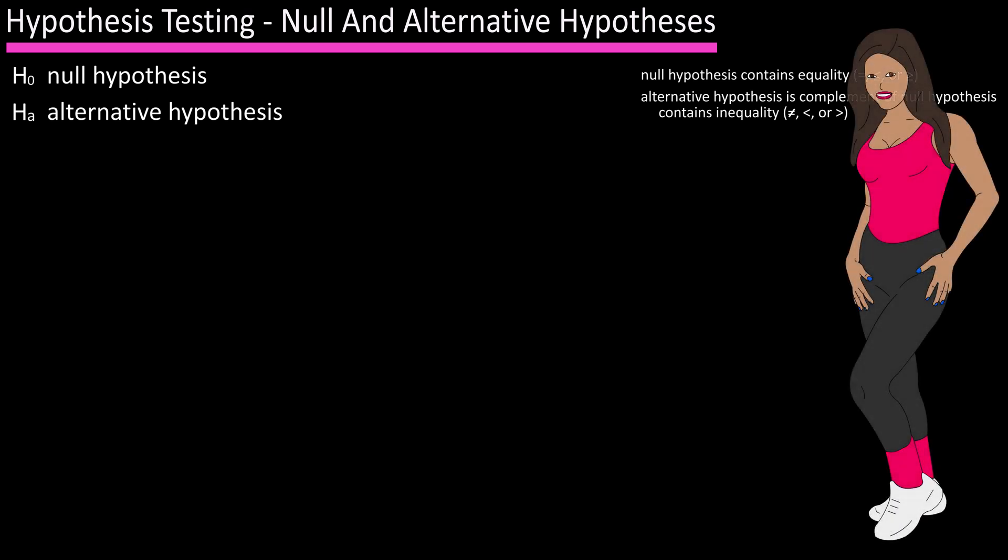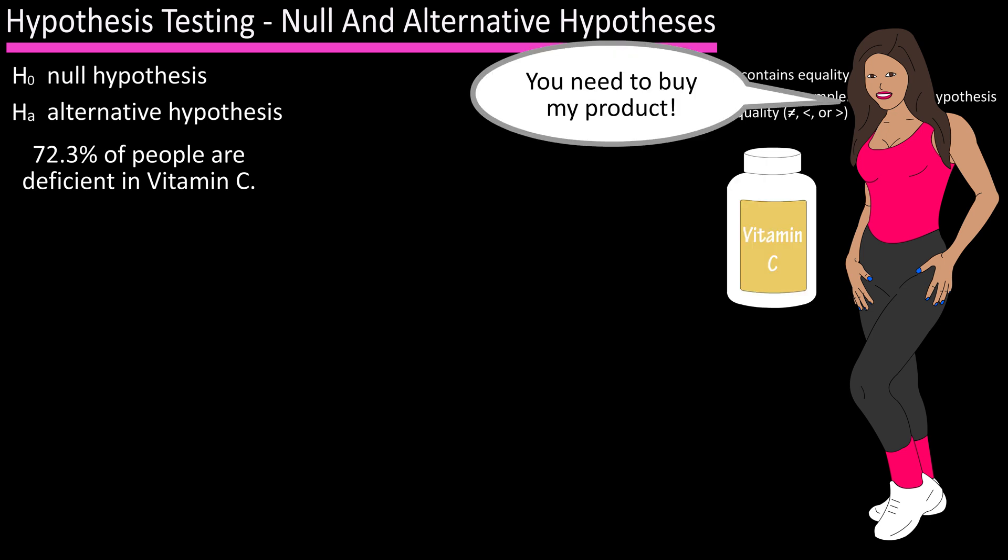And one more: a popular Instagram influencer claimed that 72.3 percent of people are deficient in vitamin C and should definitely buy her product. So the claim is that the population proportion p is equal to 0.723.